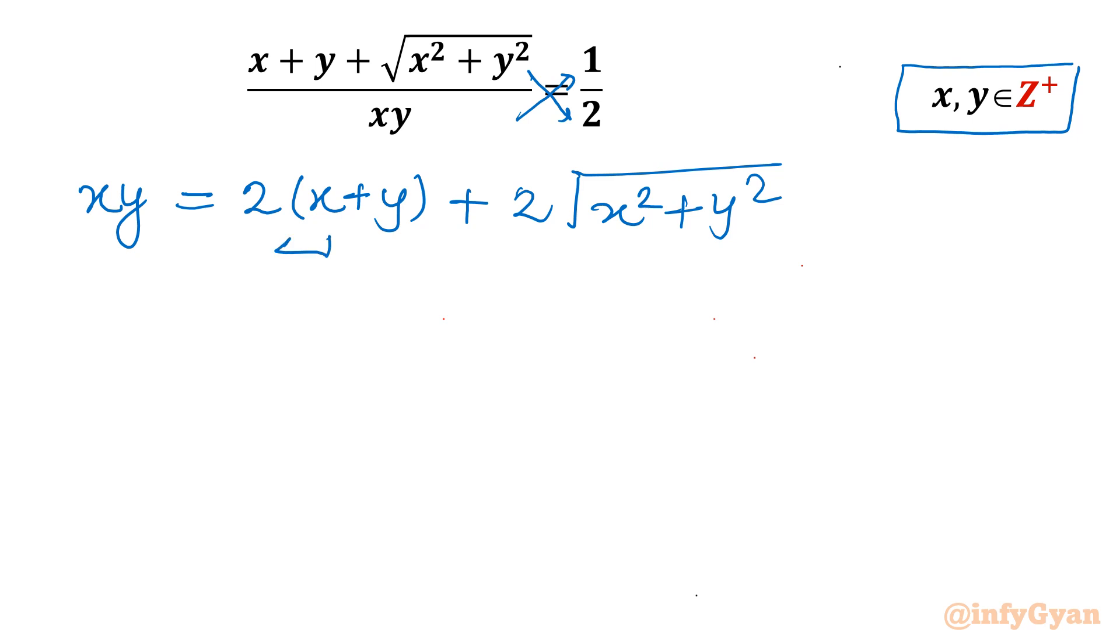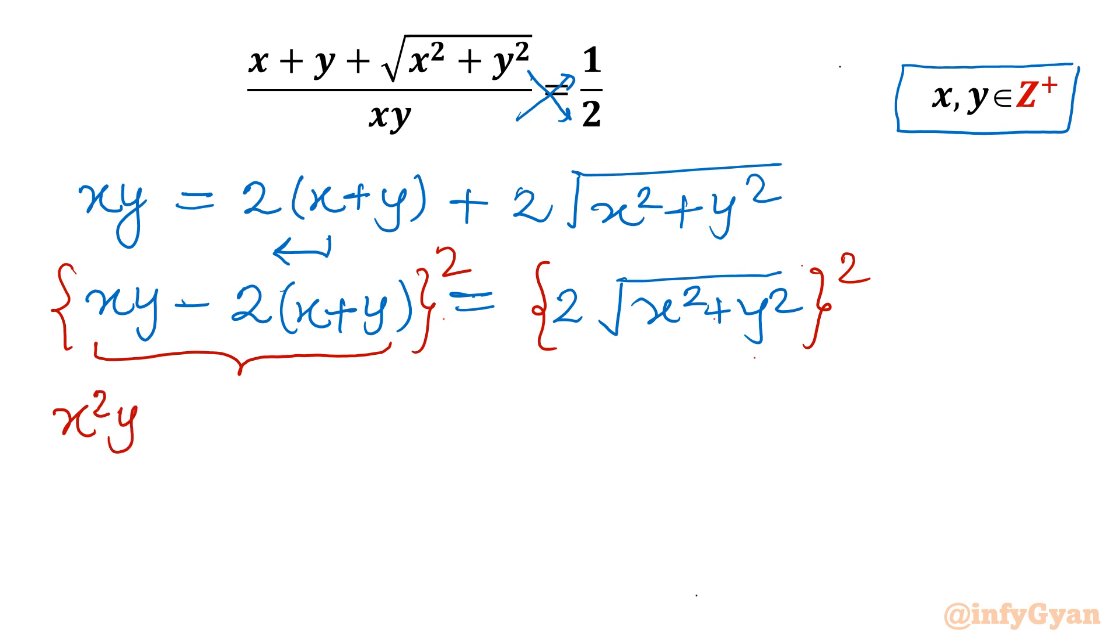Now let's consider this term to the left. I will be writing xy minus 2 times x plus y equal to 2 times square root x square plus y square. Now to get rid of this radical term, I will consider squaring both sides. Now I will apply a minus b whole square formula. So let's apply a square.